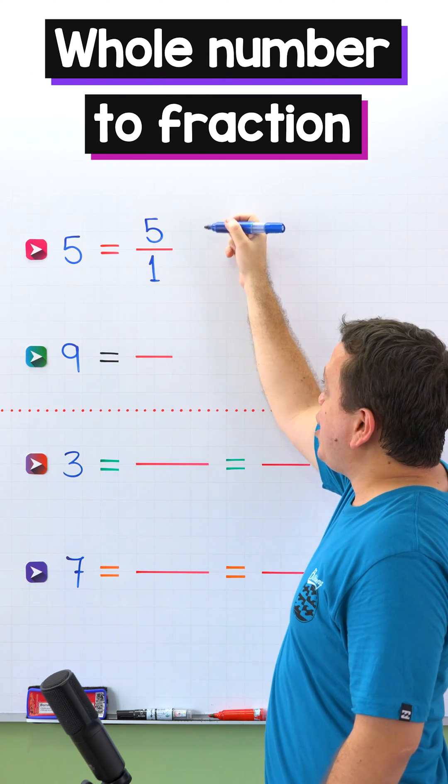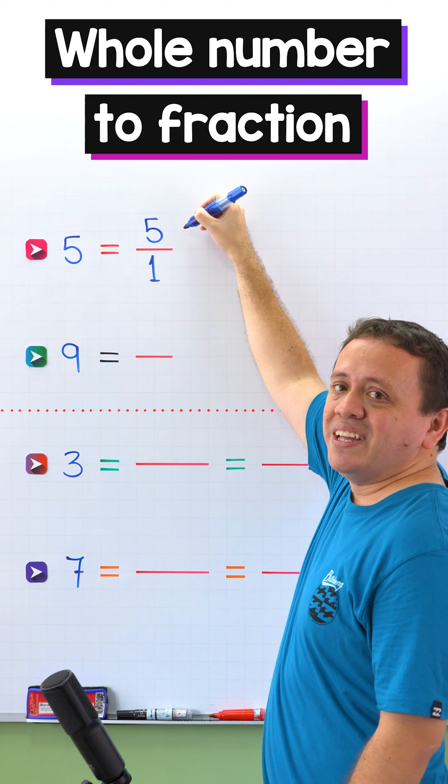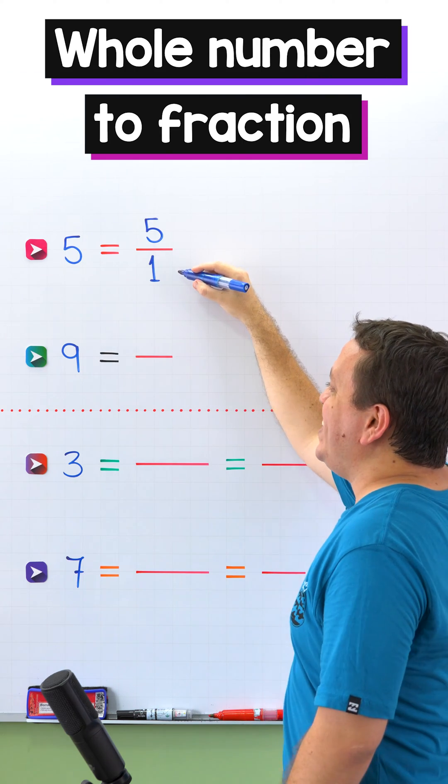Never forget that in a fraction, like this one, the top number is the numerator, and the bottom number is the denominator.